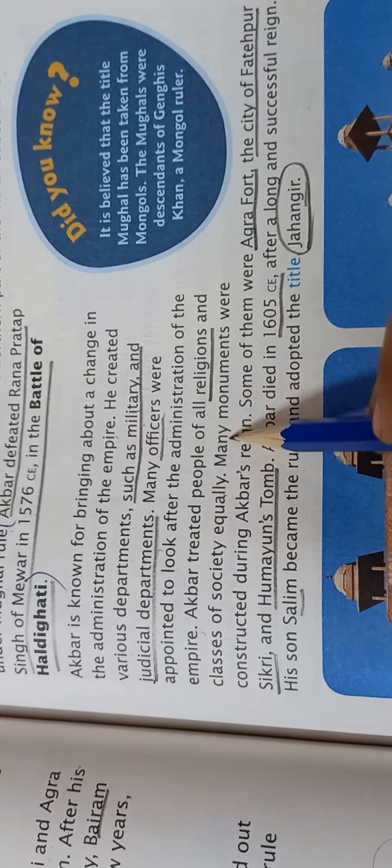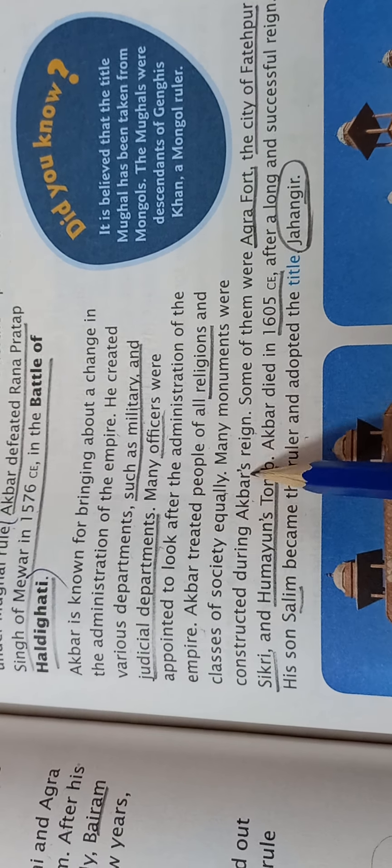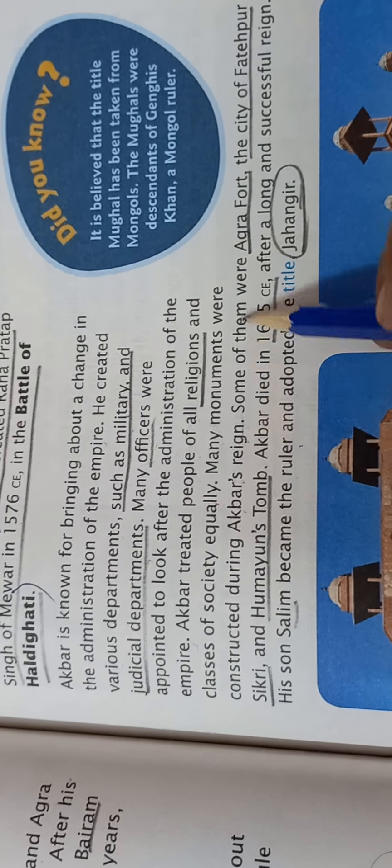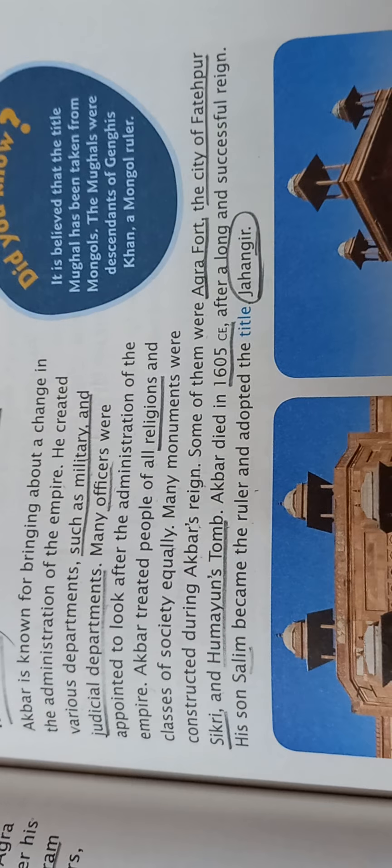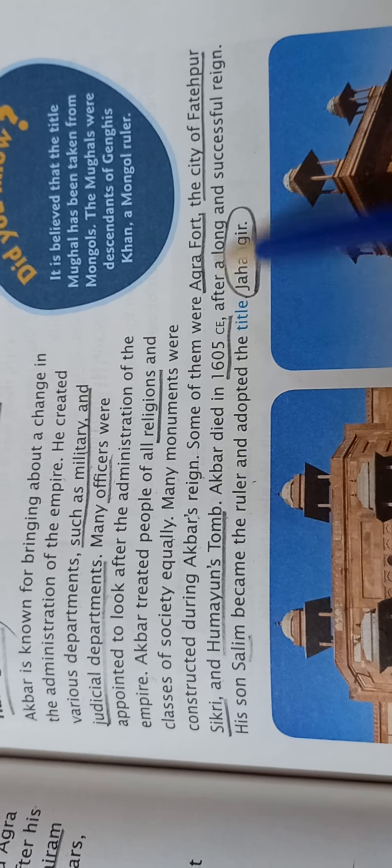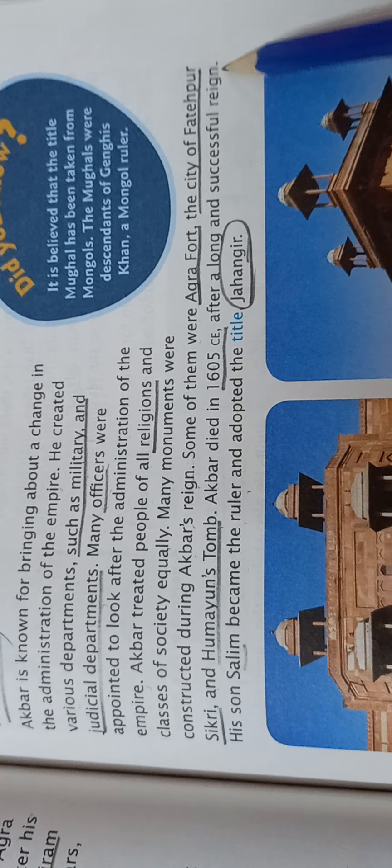Today we will start the new chapter, that is chapter 9, the Mughals. The first topic is establishment of the Mughal Empire. In the previous chapter we read that Babur defeated Ibrahim Lodi, and with this the Delhi Sultanate ended. The Lodi dynasty came to an end and a new dynasty came to power.